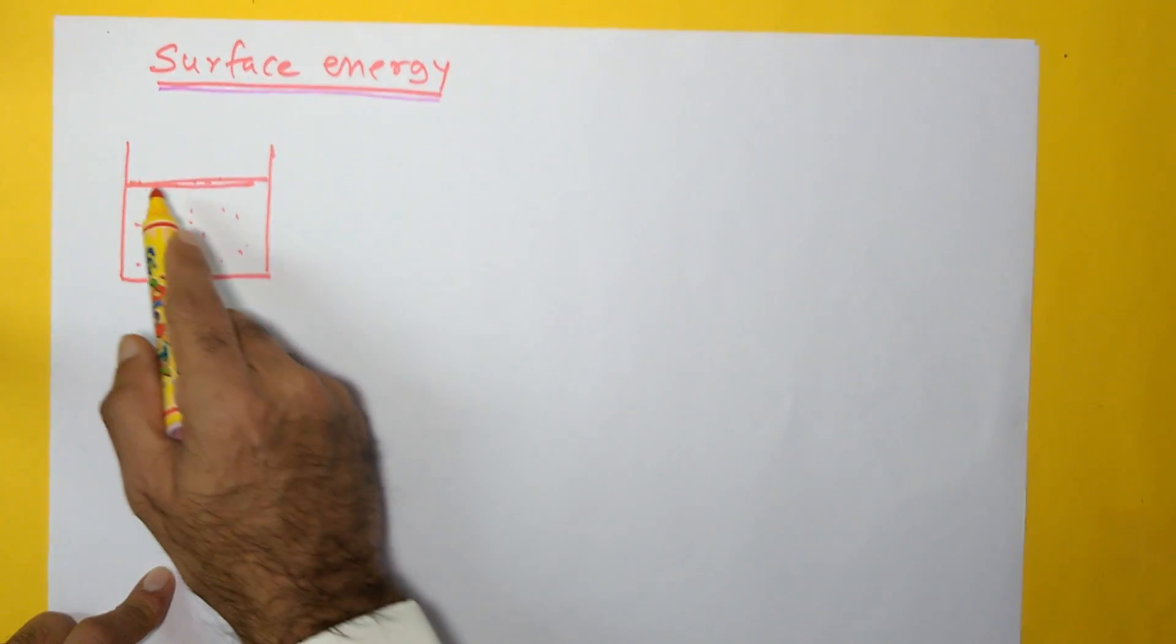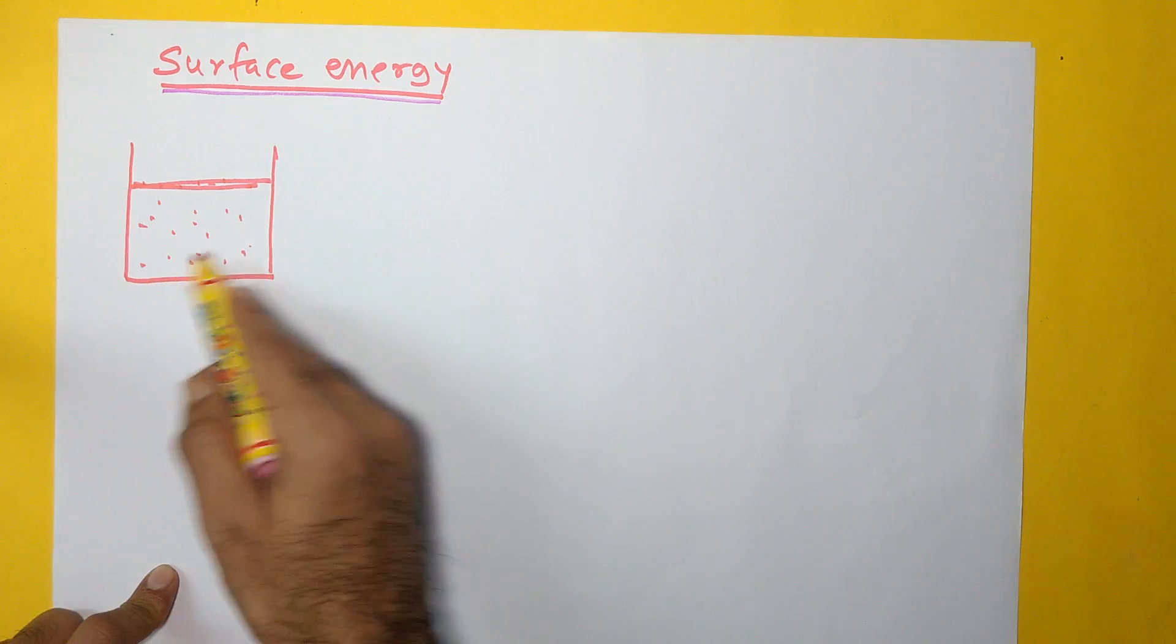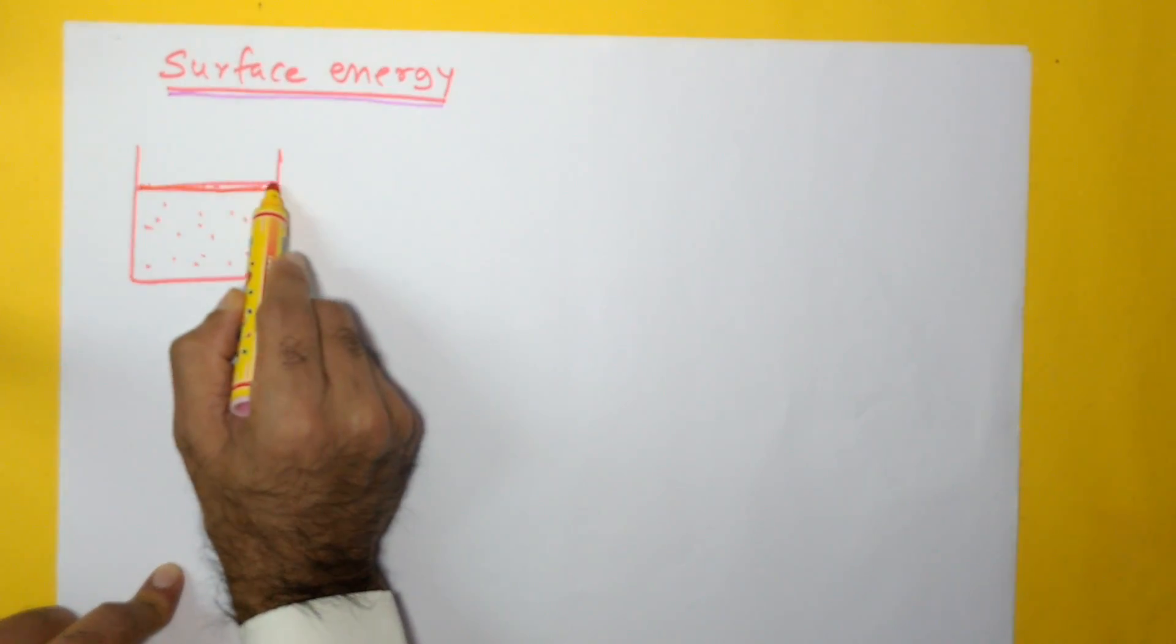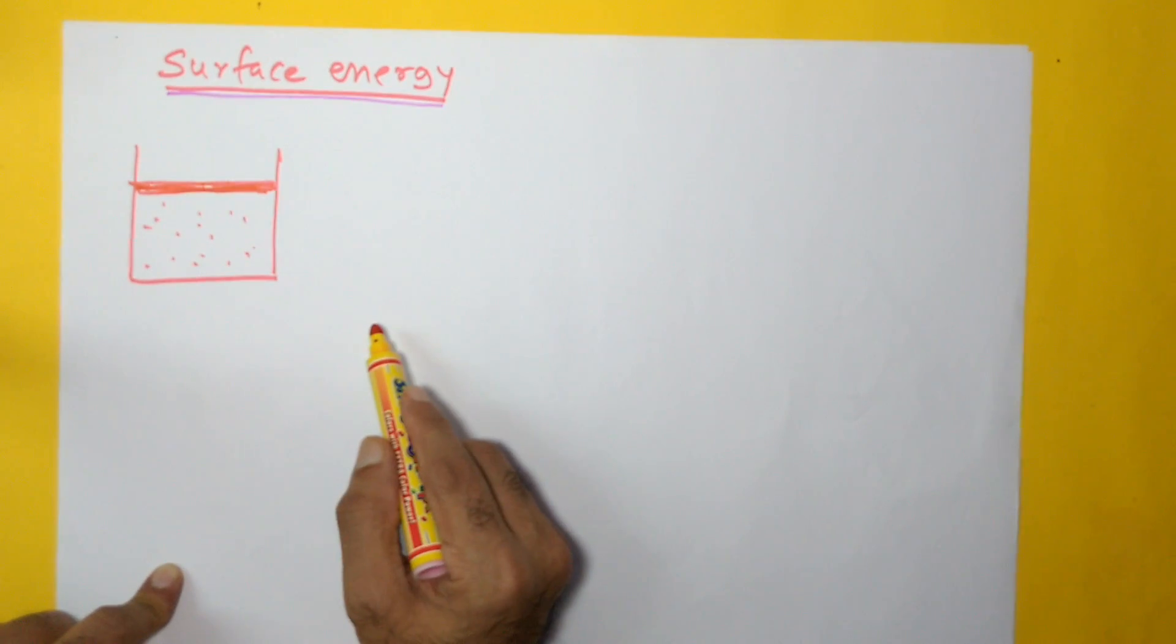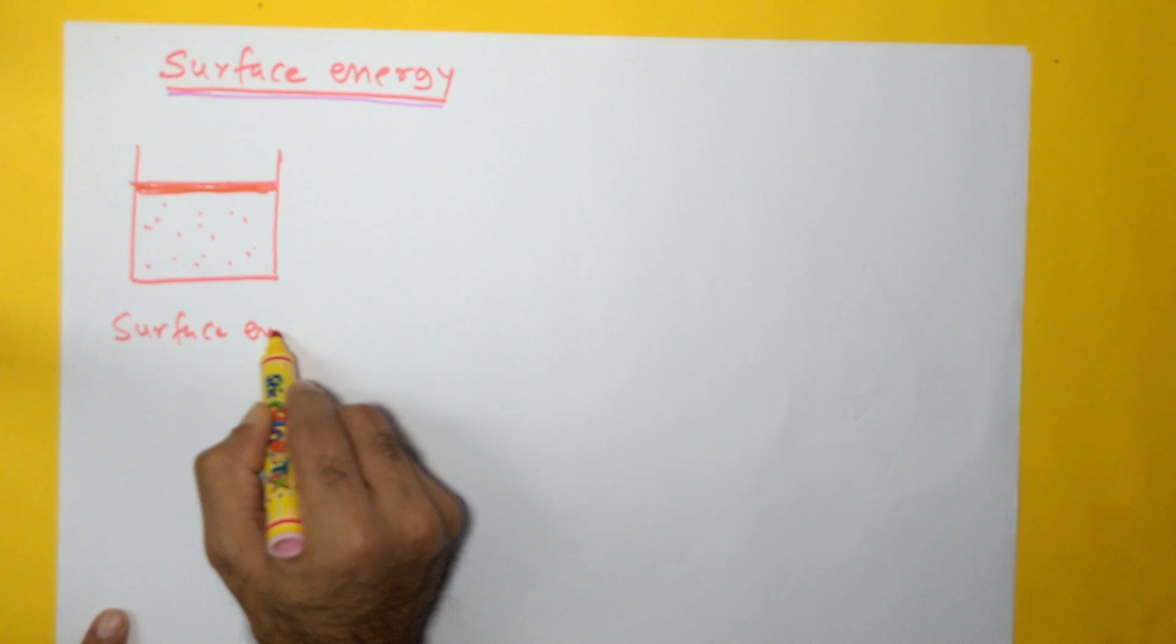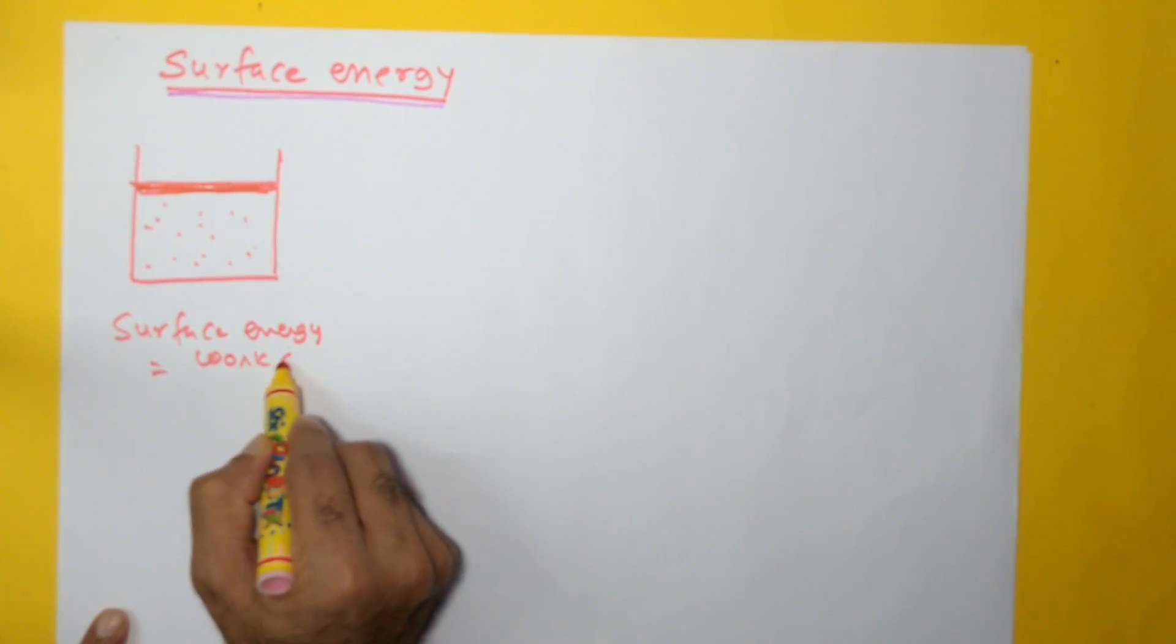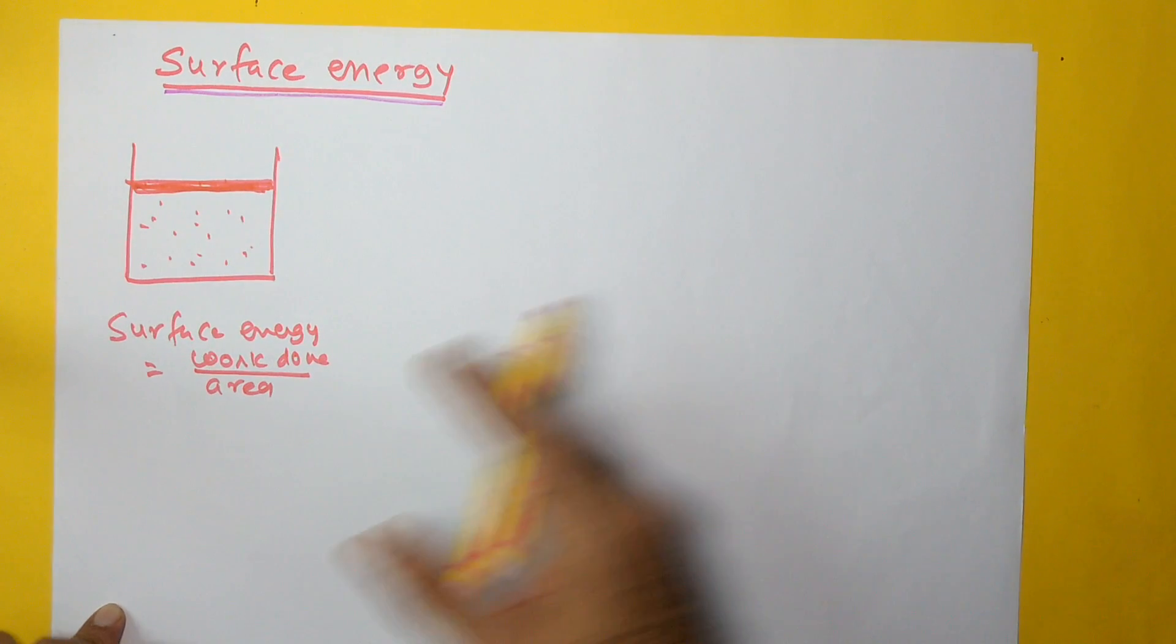As I mentioned, the molecules over here possess more potential energy, and that potential energy is also known as surface energy. Surface energy is the energy possessed by these molecules in the surface of the liquid. For the sake of definition, we write that surface energy is equal to work done per unit area. What exactly this is, we will be discussing shortly.